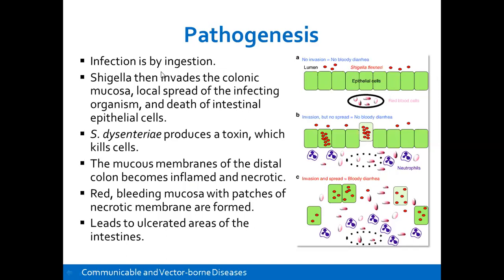The infection is by ingestion. The bacteria invades the colonic mucosa, then there is local spread of infection, and it destroys the epithelial cells. One important thing about Shigella is that it produces toxins which kill the cells — it is not the bacteria itself directly, but the toxins it produces. Most gram-negative bacteria produce endotoxins which affect the cells. The mucosal membrane of the colon becomes inflamed and starts bleeding, with patches of necrotic membranes being formed.